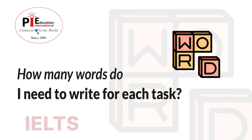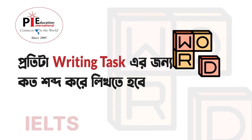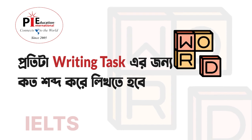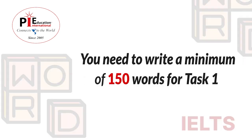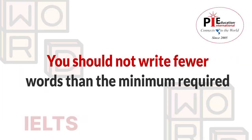How many words do I need to write for each task? For IELTS Writing tasks, you need to write a minimum of 150 words for Task 1 and 250 words for Task 2. You should not write less than the minimum required word count.